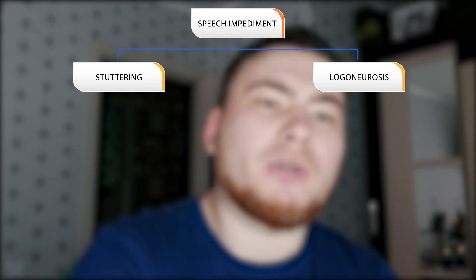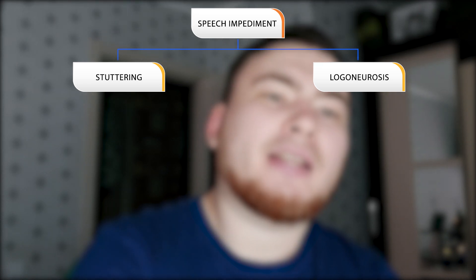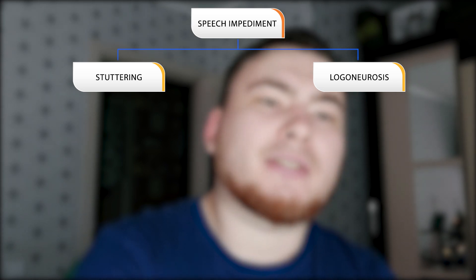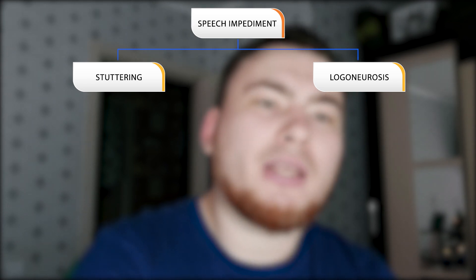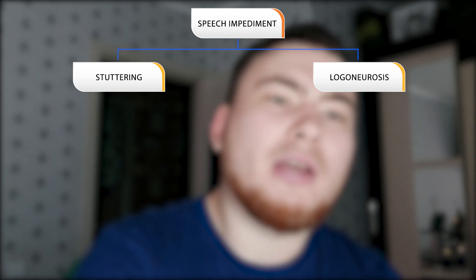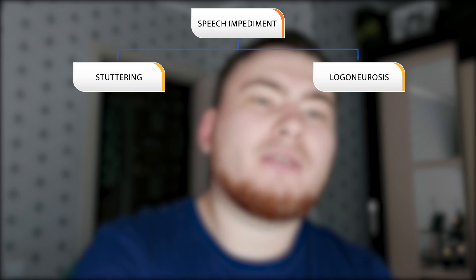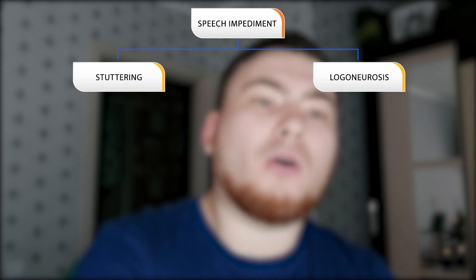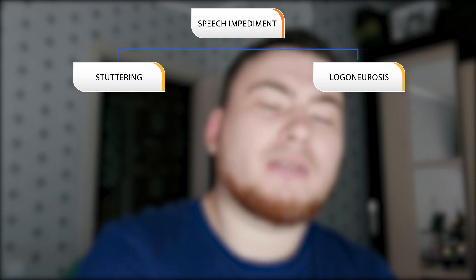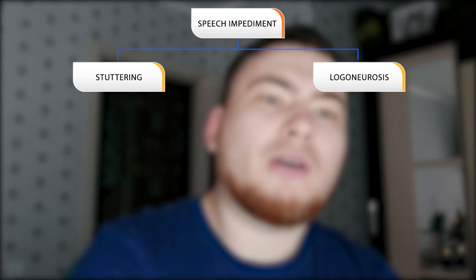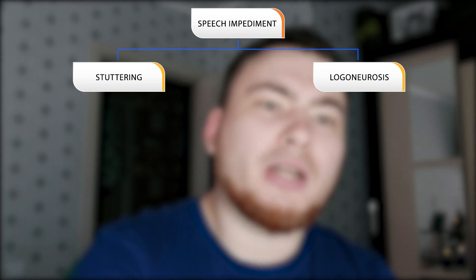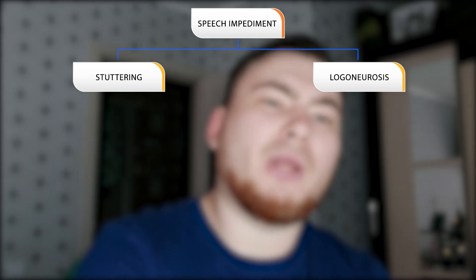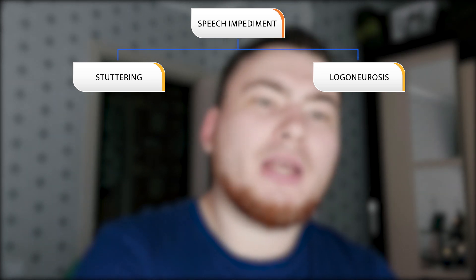In the semi-severe form, there are some people who are not able to speak without stuttering anywhere and at all times, even in a comfortable situation alone. There are also some people who are unable to speak without stuttering in front of others, but when they are alone they can speak like a normal person without a stutter.